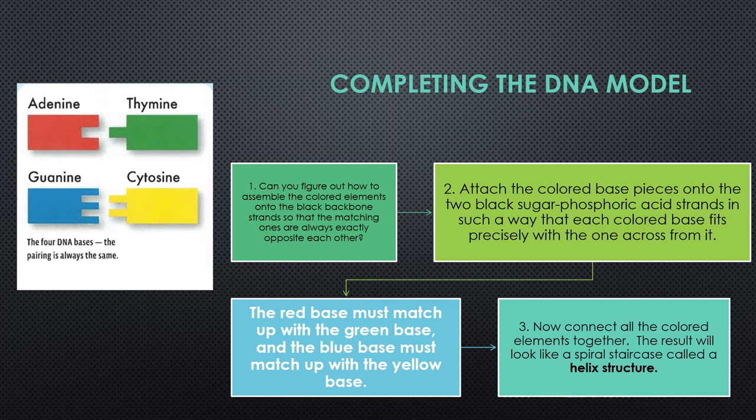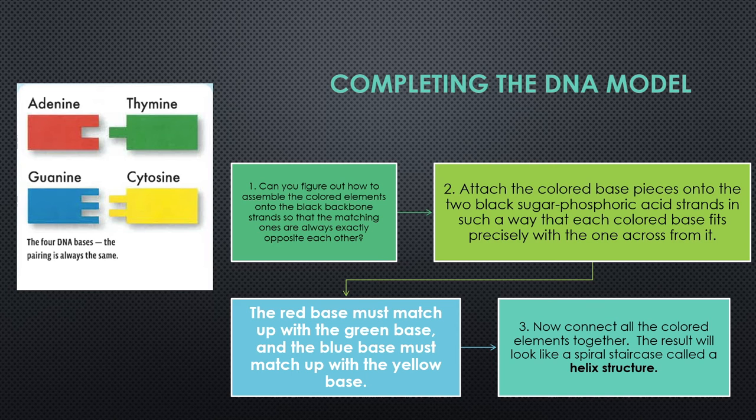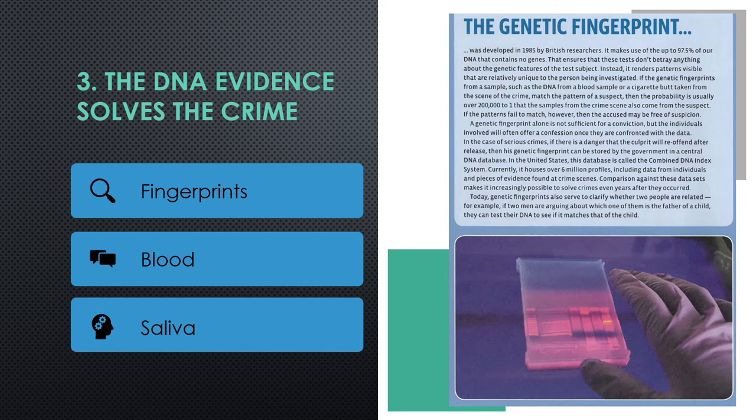So as you can see, I'm attaching the colored base pieces onto the two black sugar phosphoric acid strands in such a way that each colored base fits precisely with the one across from it. The red base must match up with the green base and the blue base must match up with the yellow base. Now, I'm connecting all the colored elements together. The result will look like a spiral staircase called a helix structure. And there you have it, voila! We just completed the DNA model.